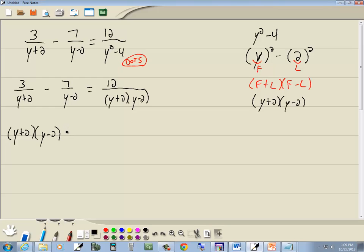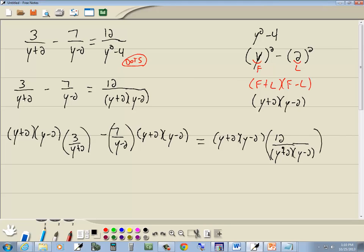And we're going to multiply everything by this. So multiply it times our first fraction, times our second fraction. I'm putting it behind it on this one so I don't lose track of that negative. And we'll multiply it times the fraction on the right side. Over here, the y plus 2 is going to cancel. Here, the y minus 2 is going to cancel. And over on this side, the y plus 2s will cancel and the y minus 2s will cancel.